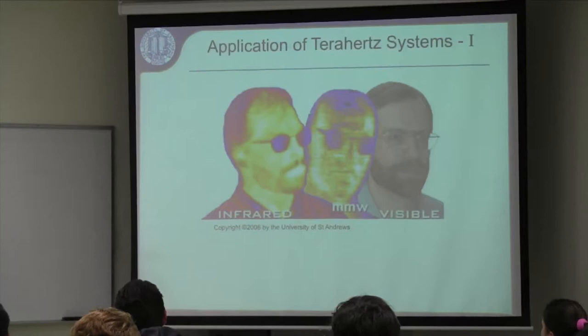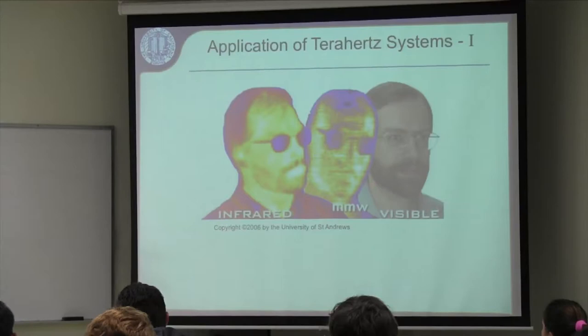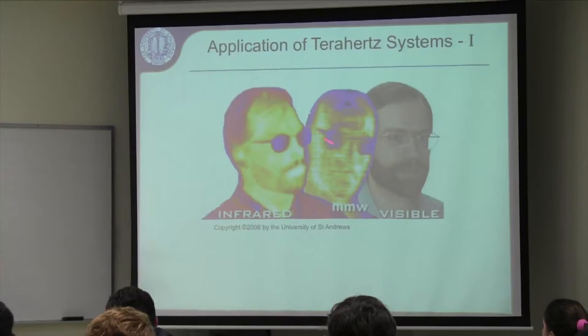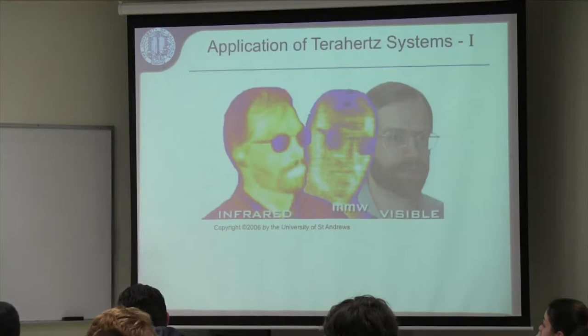This picture compares different frequency bands. In the visible band you see everything — beard, hair. In infrared you see the same with temperature information. But look at the millimeter wave image: the signal passes through hair, so you can see the shape of the head. It also passes through the beard, which the visible and infrared images cannot do. This is one of the interesting features of millimeter wave frequencies.